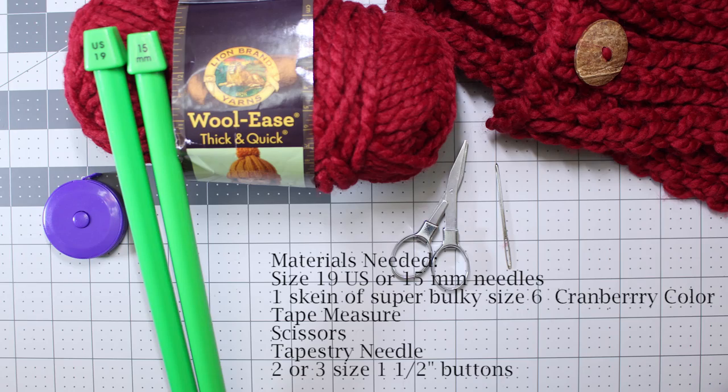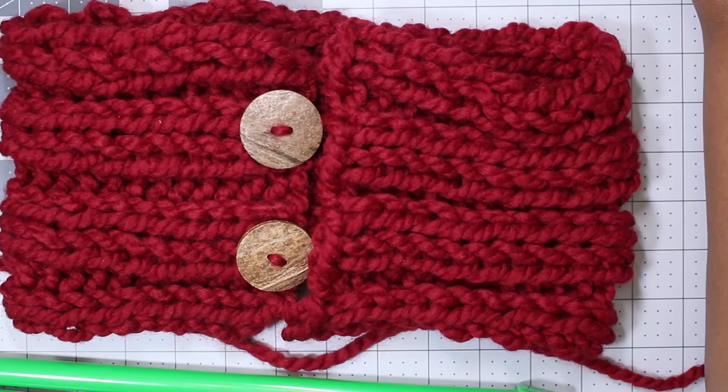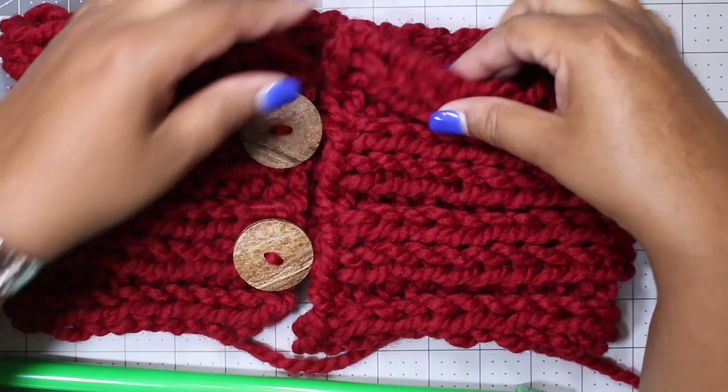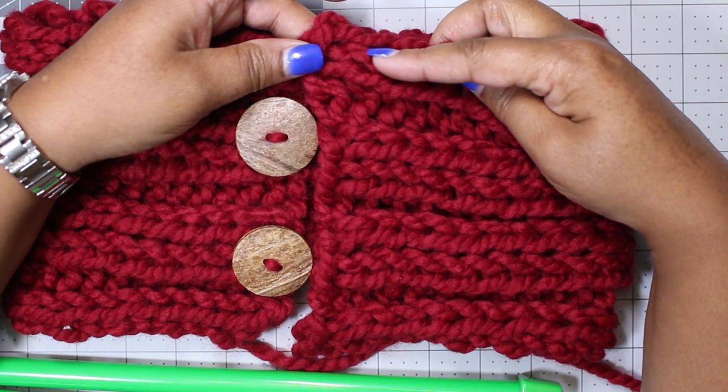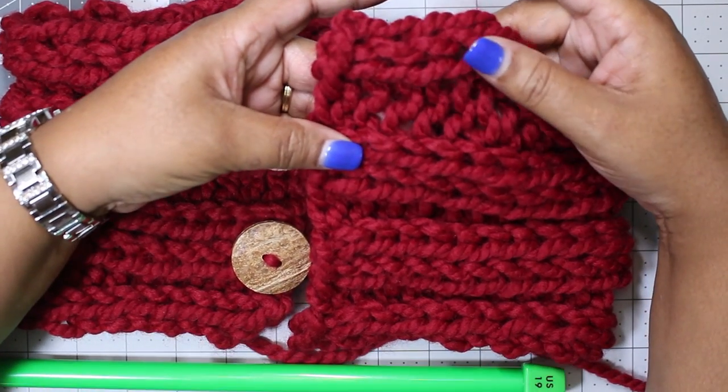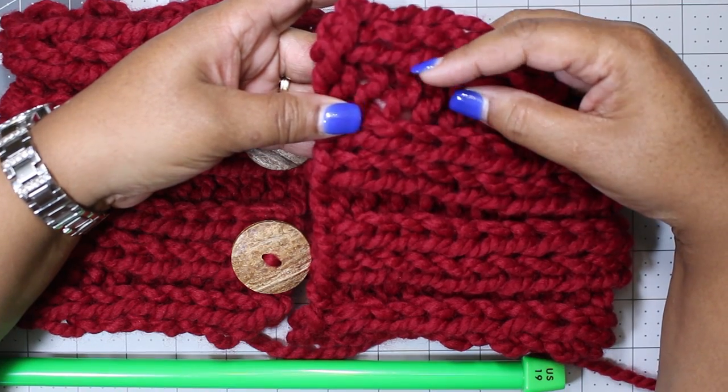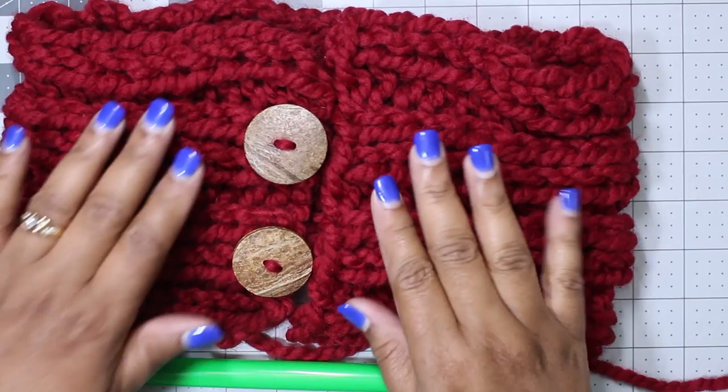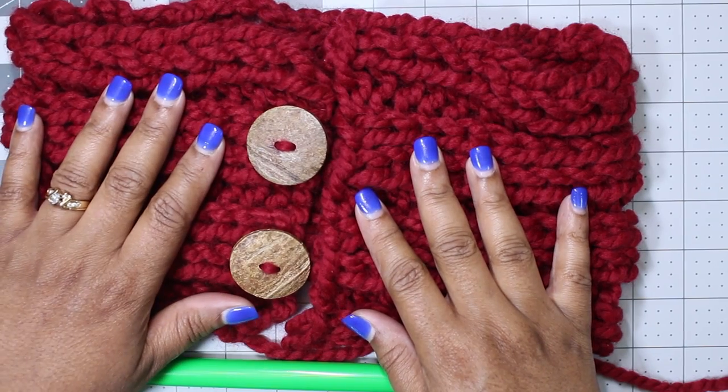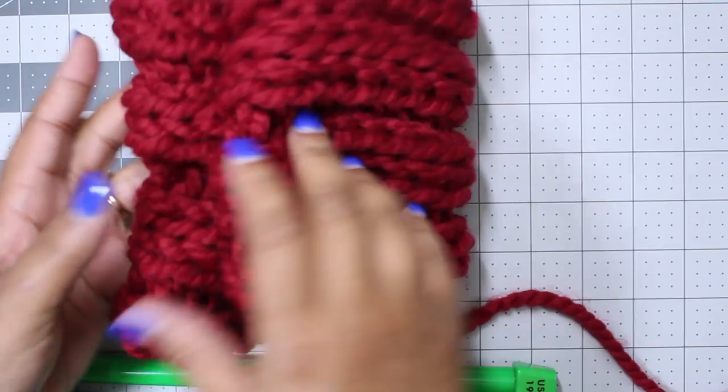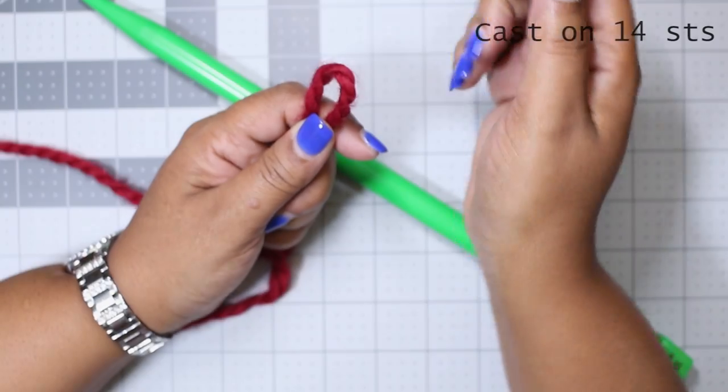The materials you're going to need for this cowl are size 19 US or 15 millimeter needles, one skein of super bulky yarn size 6, tape measure, scissors, tapestry needle, and two or three size one and a half inch buttons. Here I wanted to show you how the cowl looks completed with the two buttons attached and how the rib looks to give you the idea of how stretchy it's going to be and how cute it's going to be when it's around your neck.